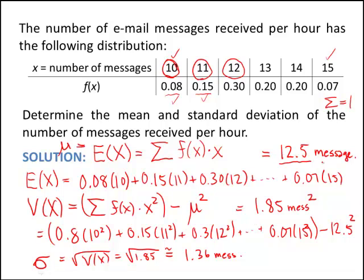So on the long run, we're getting about 12.5 messages with a standard deviation of 1.36 messages per hour.